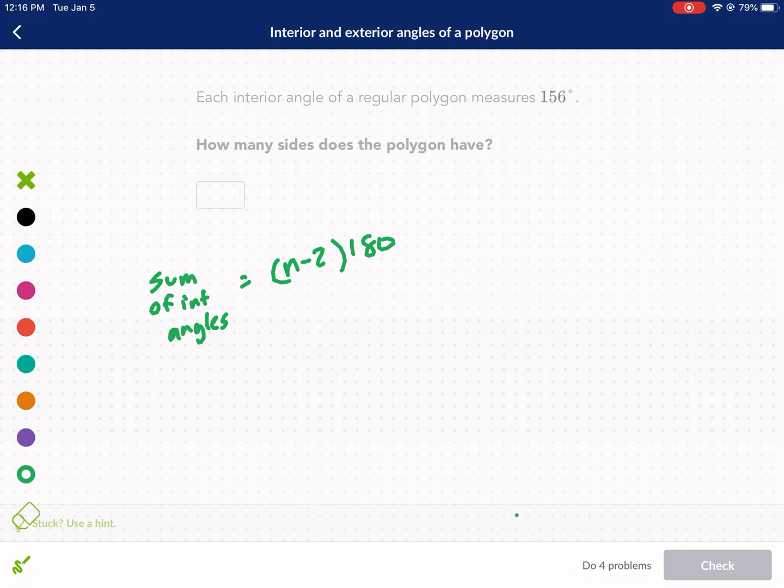And then probably each interior angle in a regular polygon, each interior angle equals n minus 2 times 180 divided by n. Now we're going to use these formulas for these four problems that are coming up.